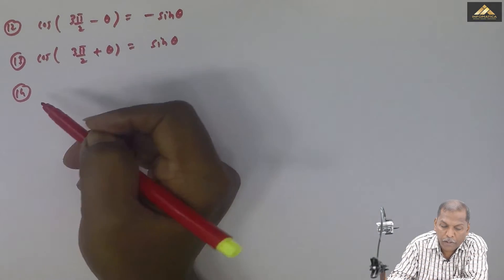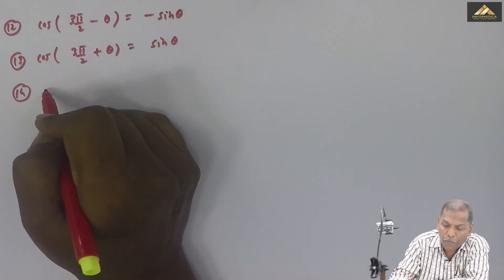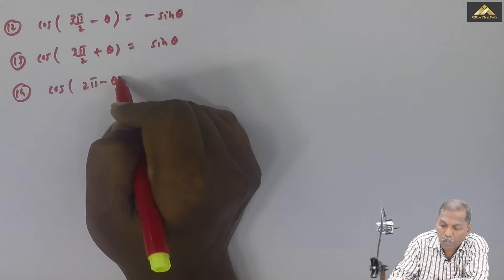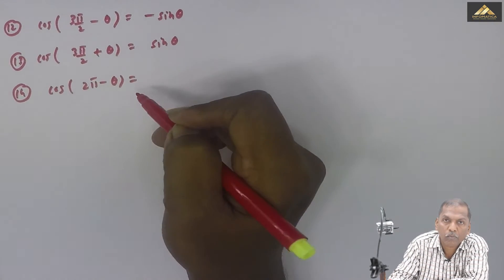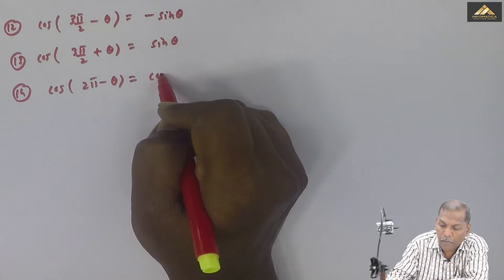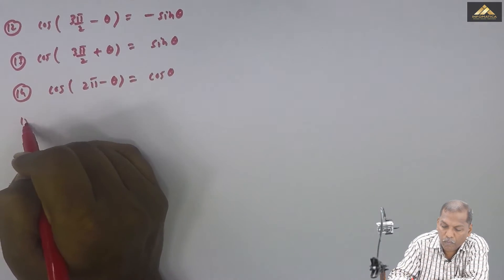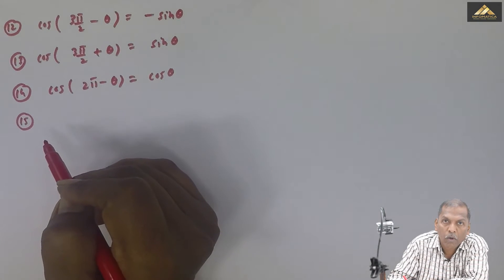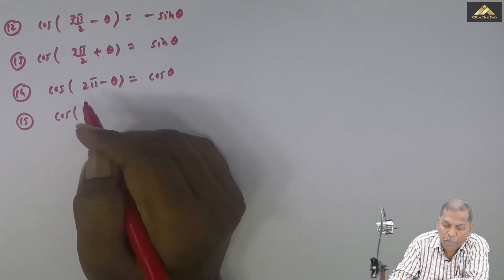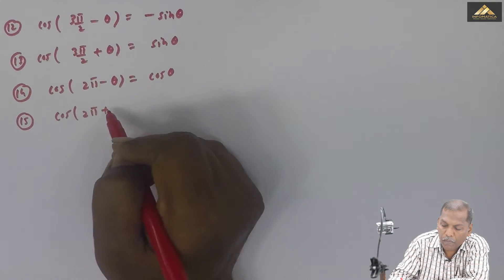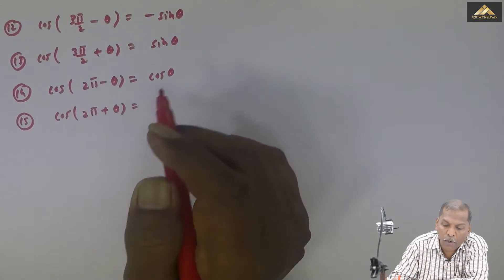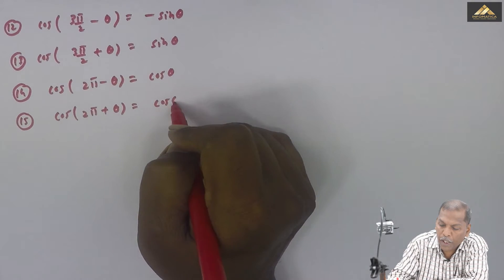Formula number 14 is cos of 2 pi minus theta, which is equal to cos theta only. Formula number 15 is cos of 2 pi plus theta, which is also equal to cos theta.